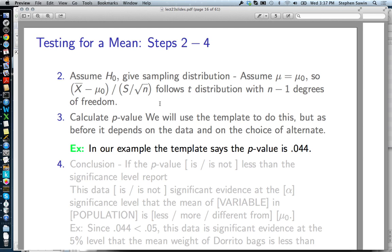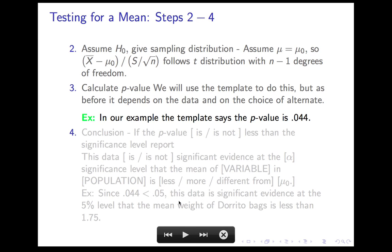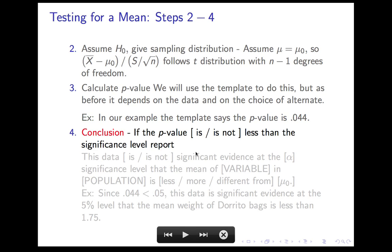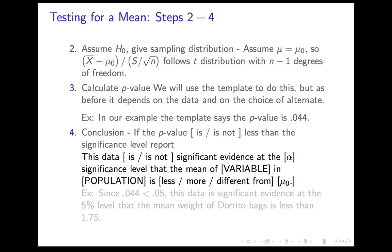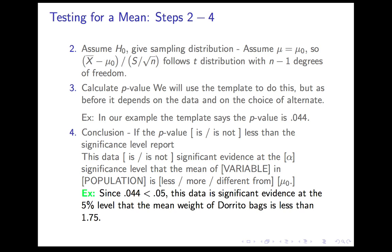So returning to the lecture, that's our p-value. And now we... Step 4 is our conclusion. If the p-value is or is not less than the significance level, then you report the data is or is not significant evidence at the α significance level that the mean of the variable in the population is less than, more than, or different from the test mean. So in our case, the p-value 0.044 is less than the significance level of 0.05. So we conclude this data is significant evidence at the 5% level that the mean weight of Dorito bags is less than 1.75. So this is reason to call and complain.